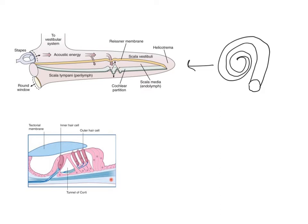The next important thing you need to be aware of is the stapes here, one of the middle ear bones. The stapes plugs into the oval window, and the oval window interacts with the fluid sitting above this green membrane, whereas the round window sits lower down and interacts with the fluid below the membrane. So when the stapes moves back and forth — following vibration of the eardrum and transduction through the malleus and the incus — it causes the fluid here to move as well. A sound wave is transduced into this fluid, and movement of this fluid causes movement of this membrane.